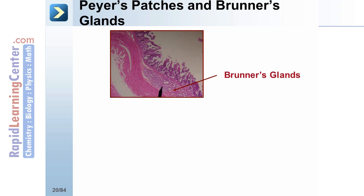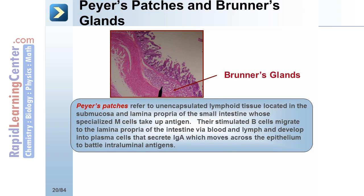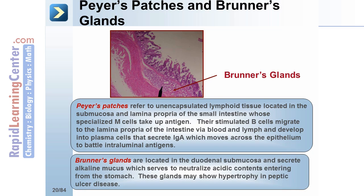Peyer's patches refer to unencapsulated lymphoid tissue located in the submucosa and lamina propria of the small intestine, whose specialized M cells take up antigen. Their stimulated B cells migrate to the lamina propria of the intestine via blood and lymph and develop into plasma cells that secrete IgA, which moves across the epithelium to battle intraluminal antigens. Brunner's glands are located in the duodenal submucosa and secrete alkaline mucus, which serves to neutralize acidic contents entering from the stomach. These glands may show hypertrophy in peptic ulcer disease.